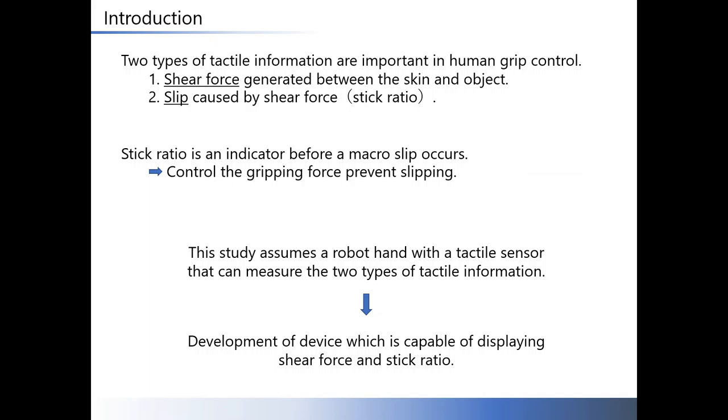Stick ratio is used to evaluate slipperiness. Stick ratio is an indicator before macro slip occurs. By sensing the stick ratio, grip control achieves so that the hand holds the object without macroslip.